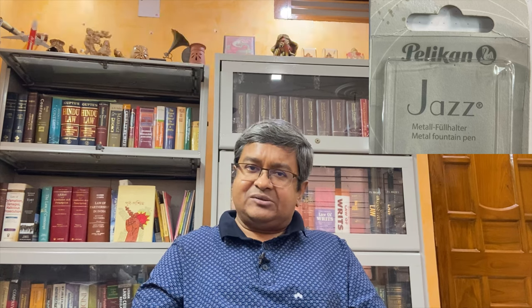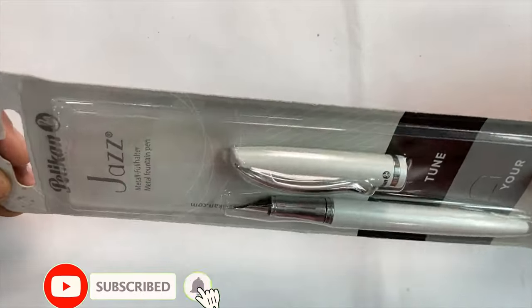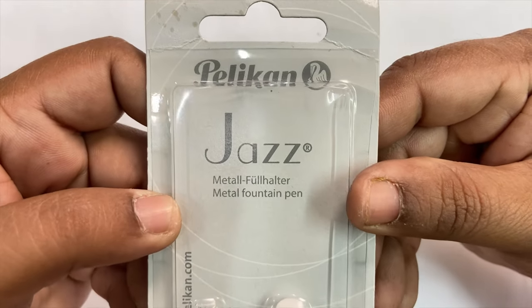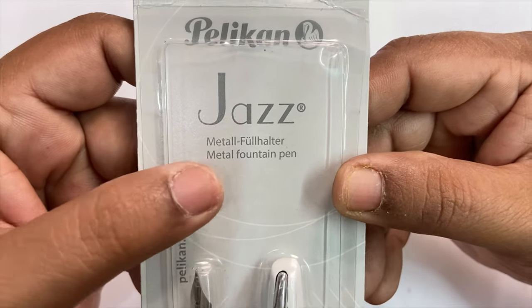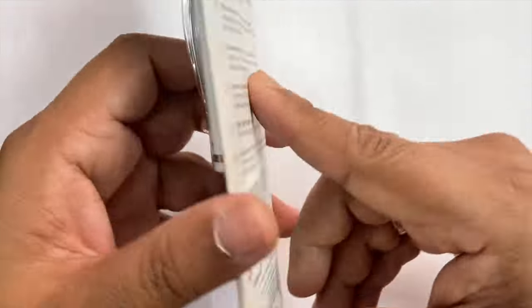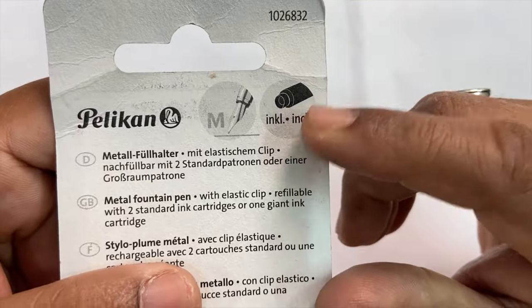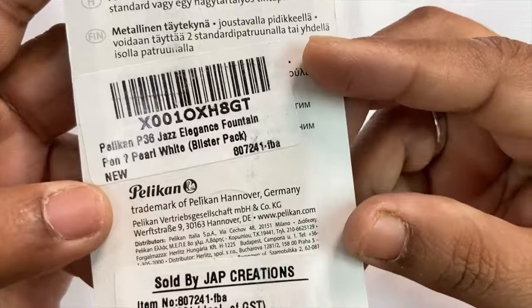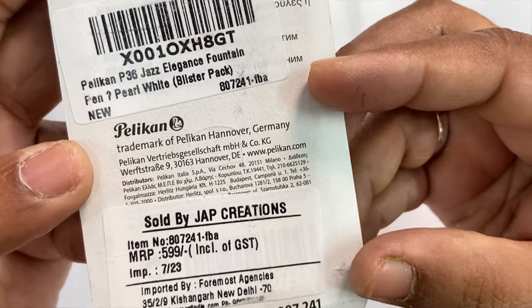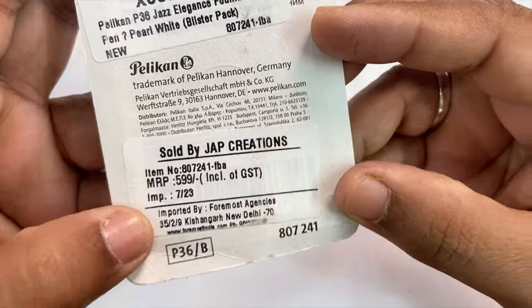Pelican Jazz is marketed in this part of the world in blister packs like these. The top announces that this is Pelican Jazz and it's a metal fountain pen. The other end announces that this is a medium nib and ink cartridge is included. It contains the original manufacturing information from Pelican Hanover, Germany and the importer details including the price.